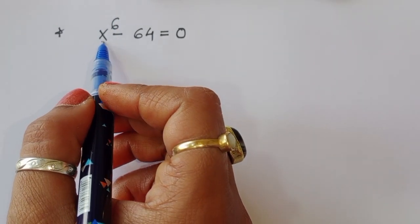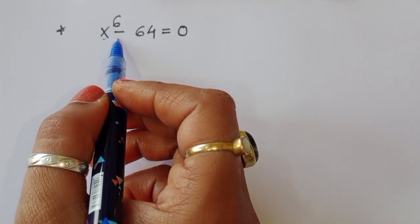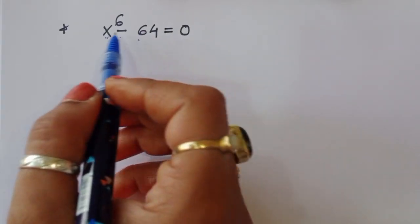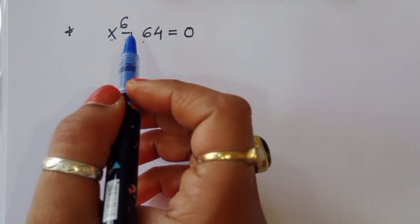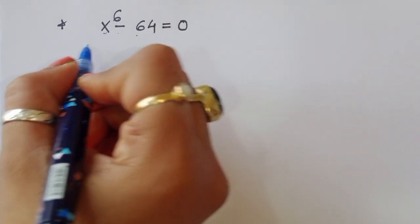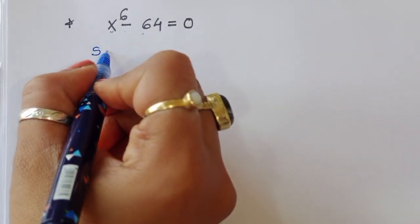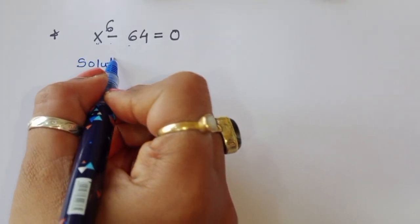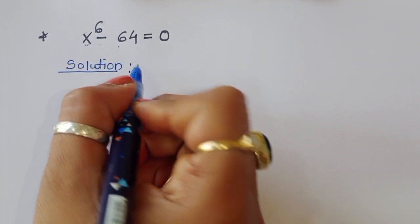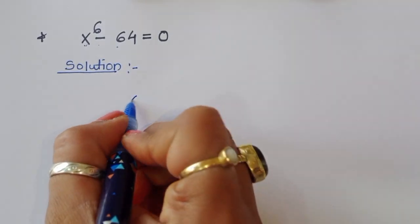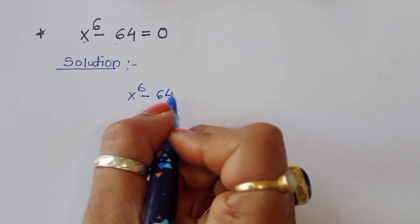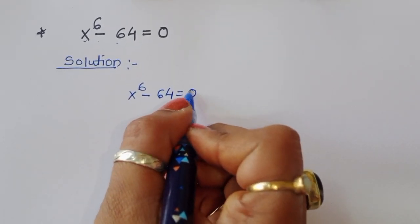The question is given: x power 6 minus 64 is equal to 0. We have to find out the value of x. Let's see the solution. x power 6 minus 64 is equal to 0.